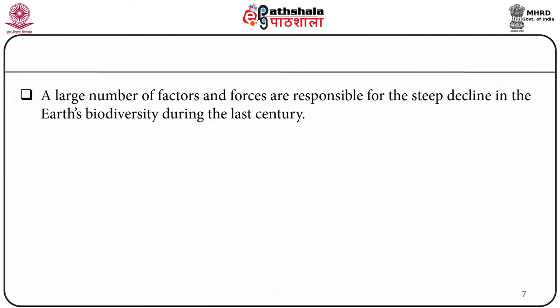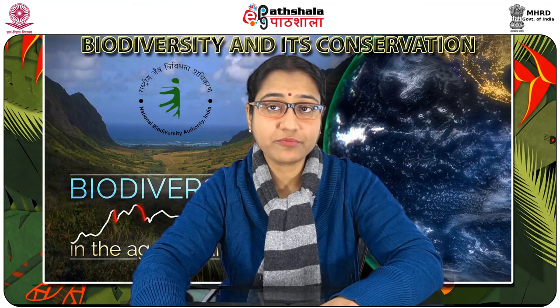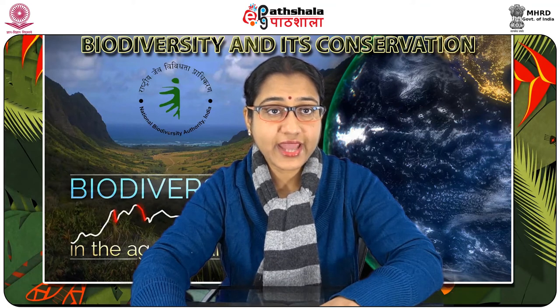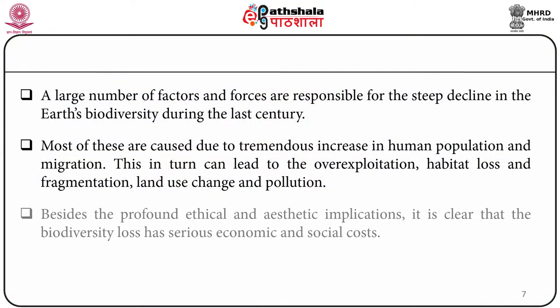Biologists estimate that as many as 27,000 species are becoming extinct each year, meaning 3 species become extinct every hour. It is important to recognize that the earth's declining biodiversity is a serious global problem. A large number of factors are responsible for this steep decline, including tremendous increase in human population and migration, leading to over-exploitation, habitat loss and fragmentation, land use change, and pollution.